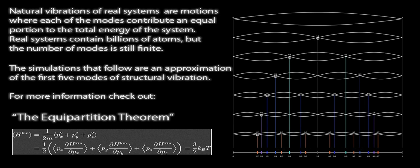Natural vibrations of real systems are motions where each of the modes contribute an equal portion to the total energy of the system. Real systems contain billions of atoms, but the number of modes is still finite. The simulations that follow are an approximation of the first five modes of structural vibration. For more information, check out the Equipartition Theorem.